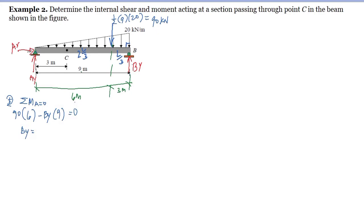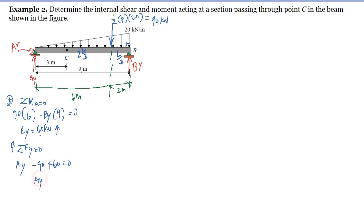Solving for BY: 90 times 6 divided by 9 gives us 60 kilonewtons. The answer is positive, meaning our assumption that BY is directed upward is correct. For the summation of vertical forces equal to zero, taking upward as positive: AY minus 90 plus 60 equals zero, giving us AY equal to 30 kilonewtons upward — confirming our assumption is correct.